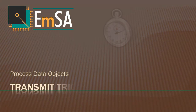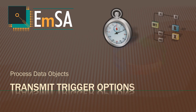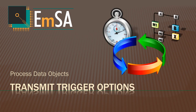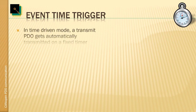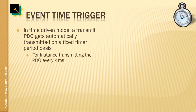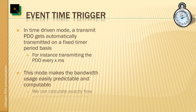In this section, we are reviewing the different transmit triggers available for transmit process data objects. The event time trigger is the easiest to explain. It simply uses a fixed time that is configurable and a multiple of milliseconds to implement a time-driven mode. That means the PDO is transmitted every X milliseconds no matter what, so this makes the bandwidth very predictable — you know exactly when which traffic is generated.